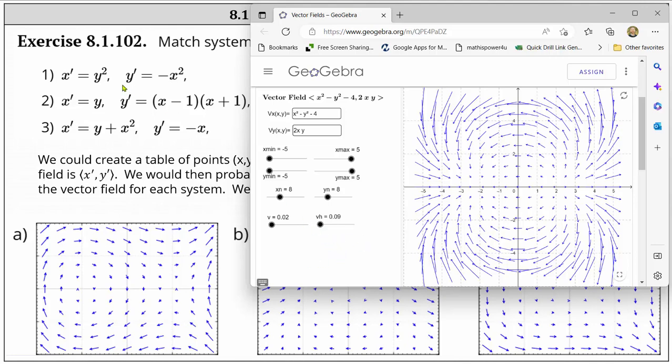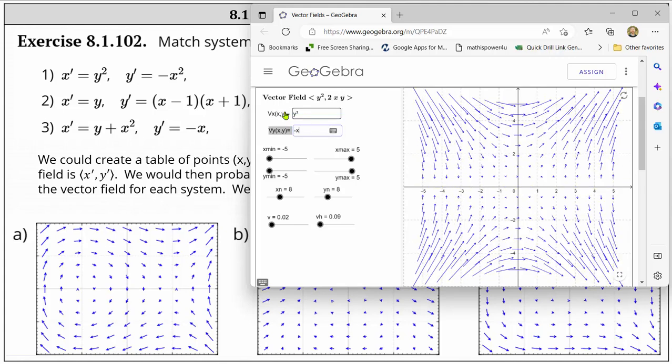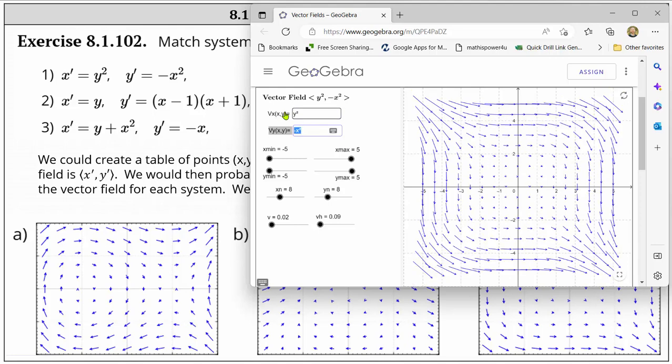So for number one, we have x prime equals y squared, and y prime equals negative x squared. So we first enter y squared, tab, and then we enter negative x squared, enter. And we have the slope field showing on the right.